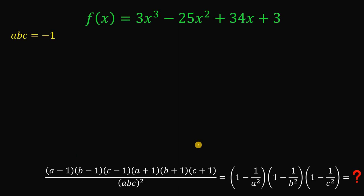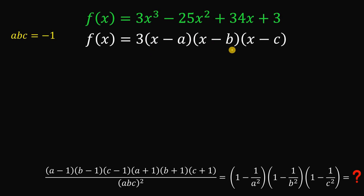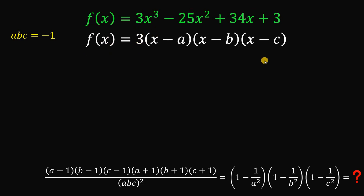Since f(x) is a cubic function with roots a, b, and c, we can rewrite it as f(x) = 3(x - a)(x - b)(x - c), where the 3 in front is the leading coefficient. Since both expressions equal f(x), they are equal to each other.